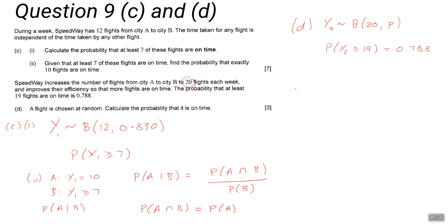It's testing whether you understand the individual terms of the binomial distribution, not just putting it into GDC. So we want the probability that Y2 is greater than or equal to 19, which is the probability that Y2 equals 19 plus the probability that Y2 equals 20. And we can add these because they're mutually exclusive. You can't have exactly 19 flights on time and exactly 20 flights on time. These are mutually exclusive events. We stop at 20 because of course there are only 20 flights.